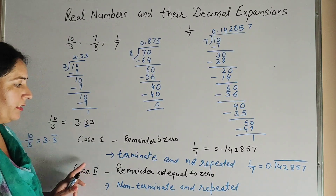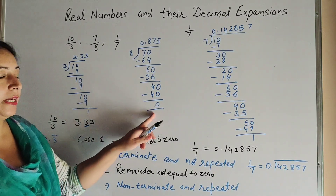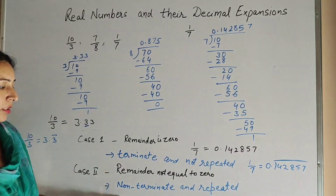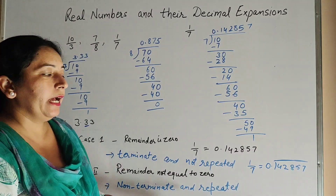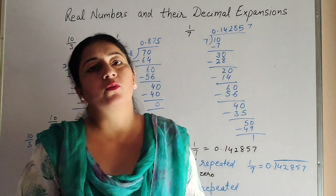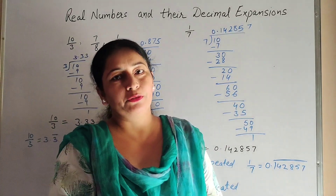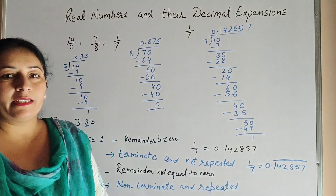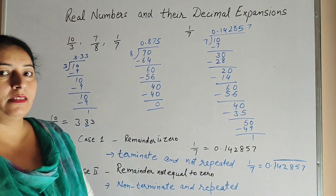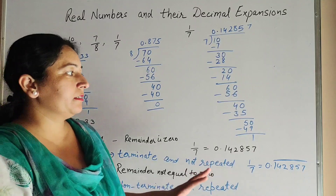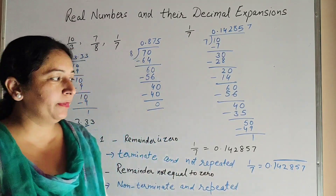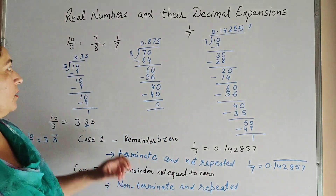So to summarize: Case one — when the remainder is zero, the decimal expansion is terminating and not repeating. Case two — when the remainder is not equal to zero, the decimal expansion is non-terminating and repeating. Thanks for watching — like, comment, and share my video, and subscribe to my YouTube channel. Thank you.